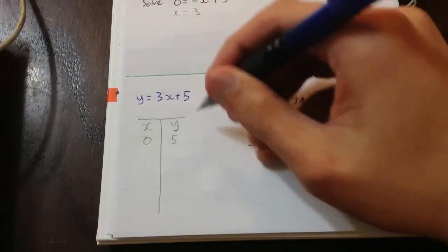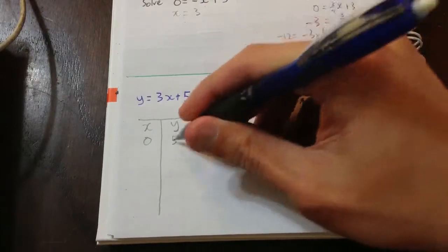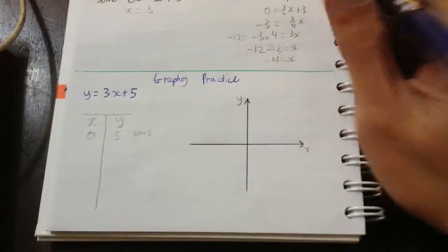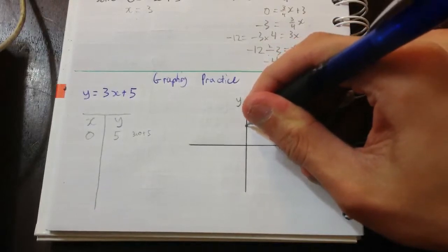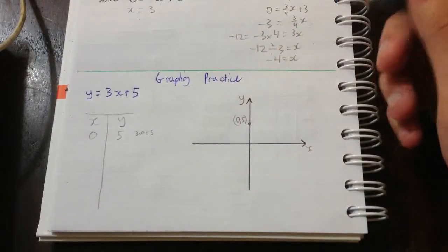Maybe I'll write that down for you. Write it here, 3 times 0 plus 5, which gives us 5. So we know that it goes 5 up. So I'm just going to call this point 0, 5. That's one way we can label it.